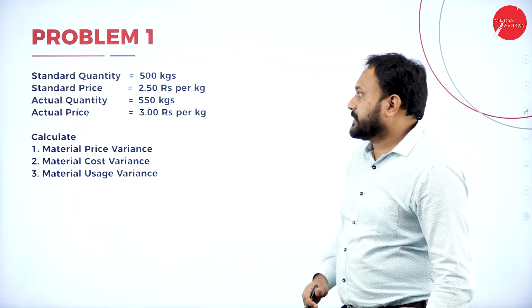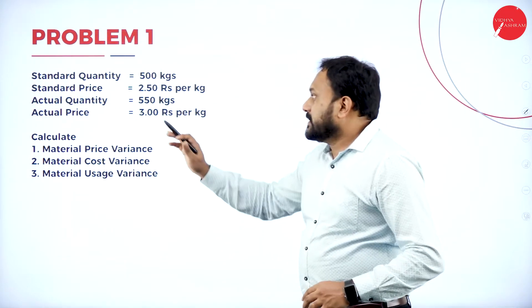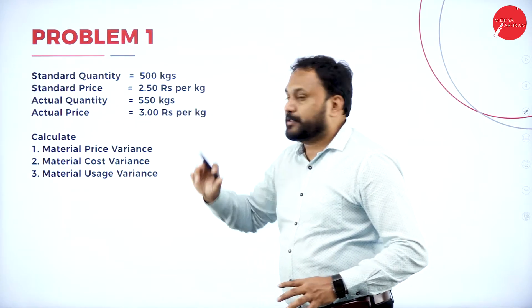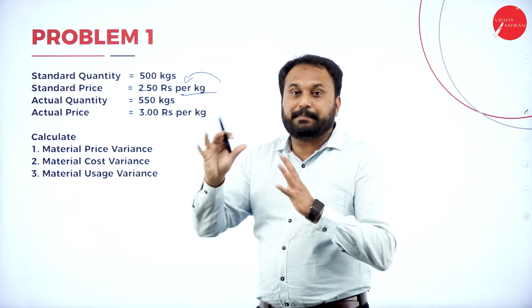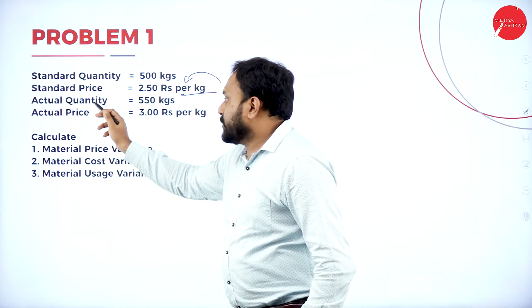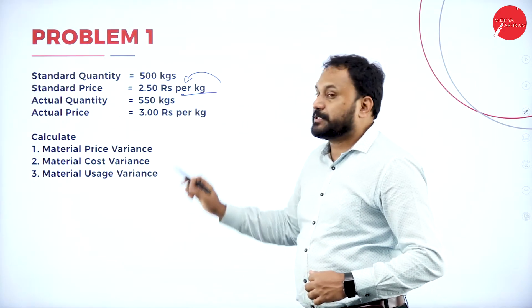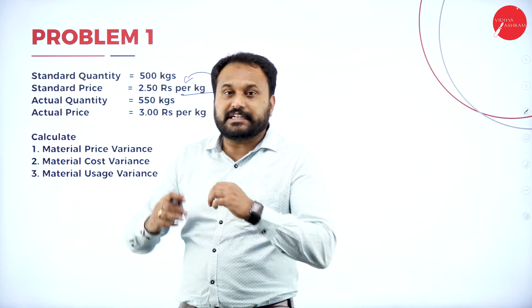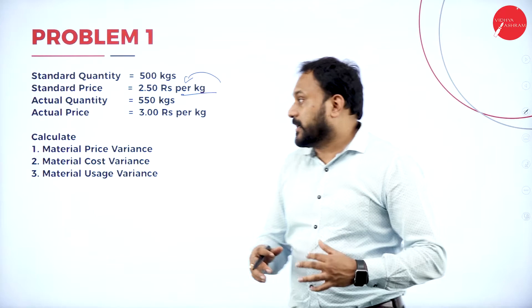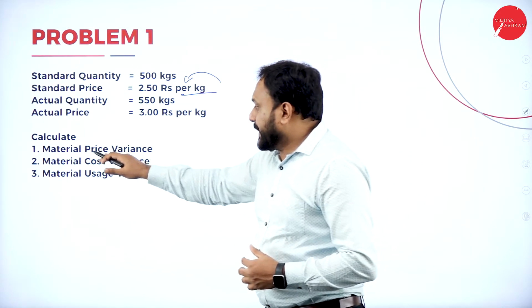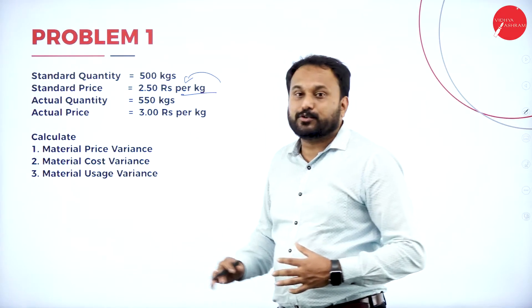The first problem: Standard Quantity = 500 kg, Standard Price = ₹2.50 per kg, Actual Quantity = 550 kg, Actual Price = ₹3.00 per kg. They have given the figures directly. We are asked to calculate Material Price Variance, Material Cost Variance, and Material Usage Variance.